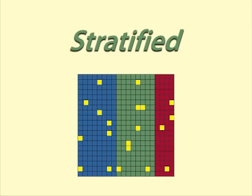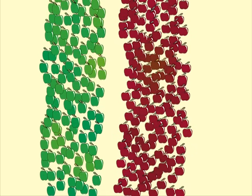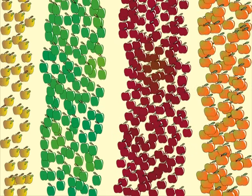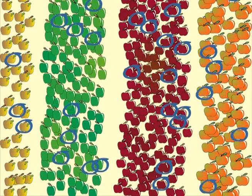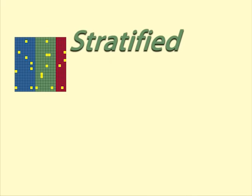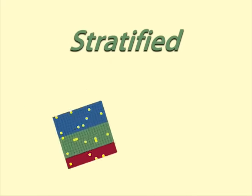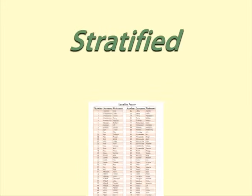Stratified sampling seems like cluster sampling, but the strata or groups are chosen specifically to represent different characteristics within the population, such as ethnicity, location, age or occupation. Within each group, a random sample is taken, sometimes in proportion to the size of the group. Stratified sampling can lead to a very good random representative sample. However, it can be complex to administer, and a sampling frame with considerable information about the population is required.